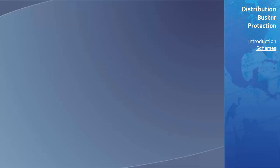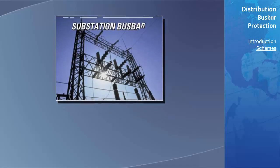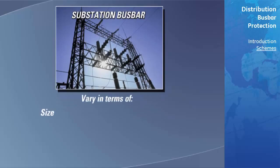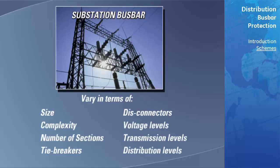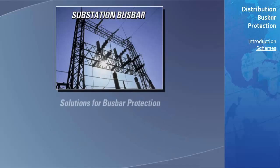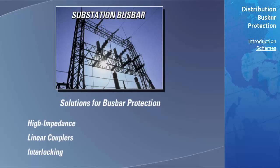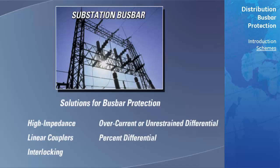Power system bus bars vary significantly in terms of their size, meaning the number of circuits connected, complexity, number of sections, tie breakers, disconnectors, voltage levels, transmission levels, and distribution levels. In the past, these technical aspects combined with economic factors led to a number of solutions for bus bar protection. The most common schemes are high impedance, linear couplers, interlocking, overcurrent or unrestrained differential, percent differential, and finally low impedance microprocessor based.